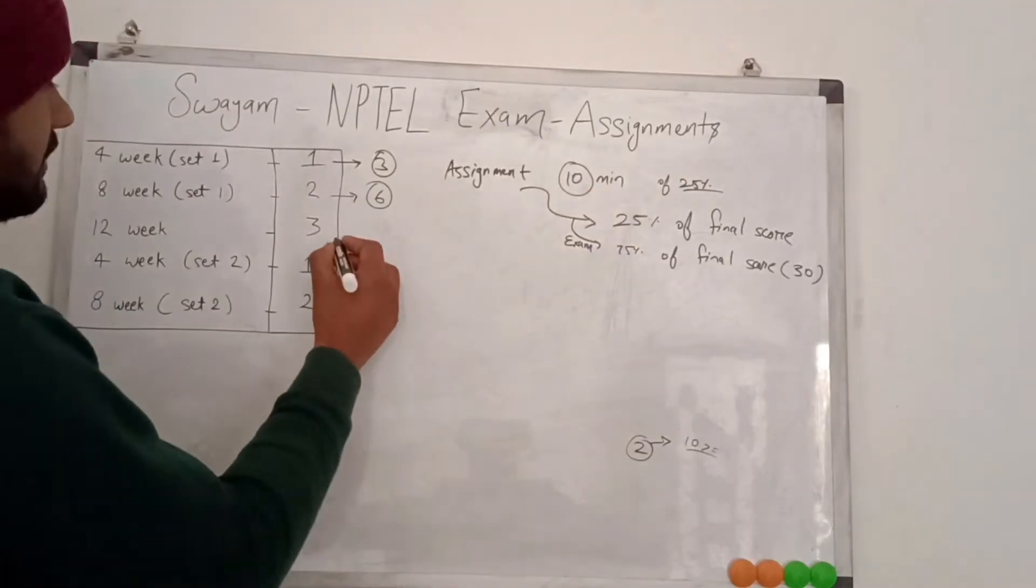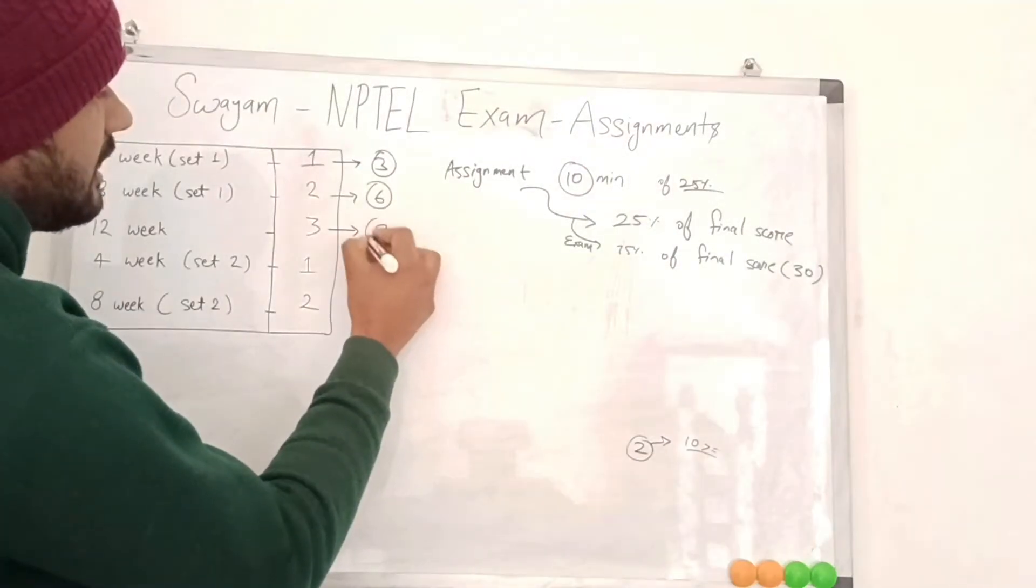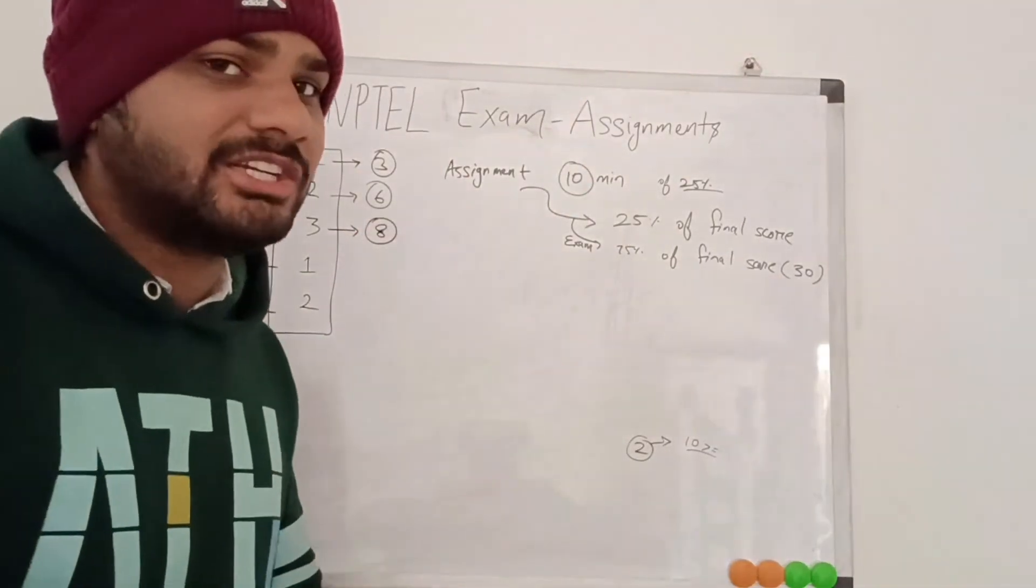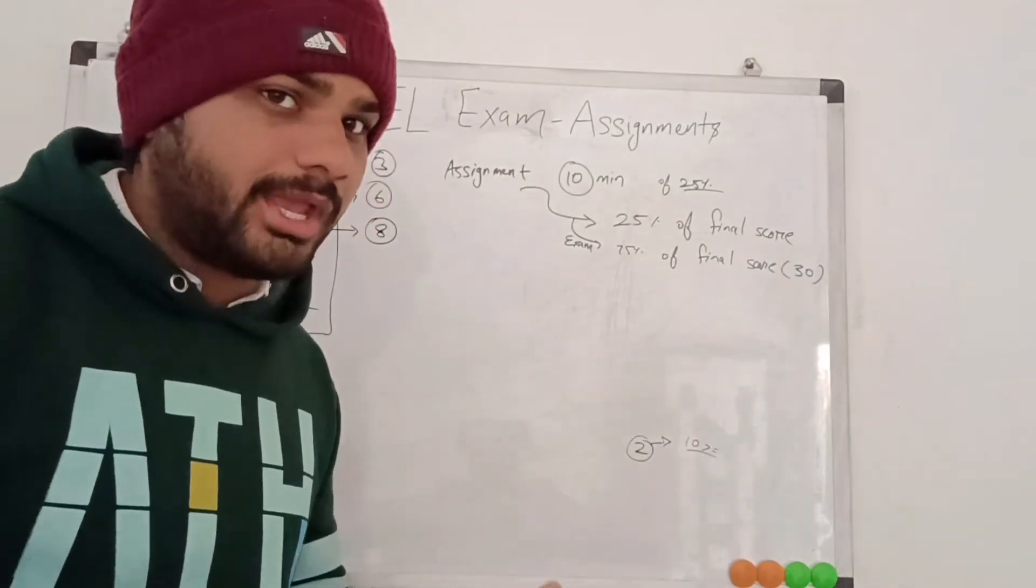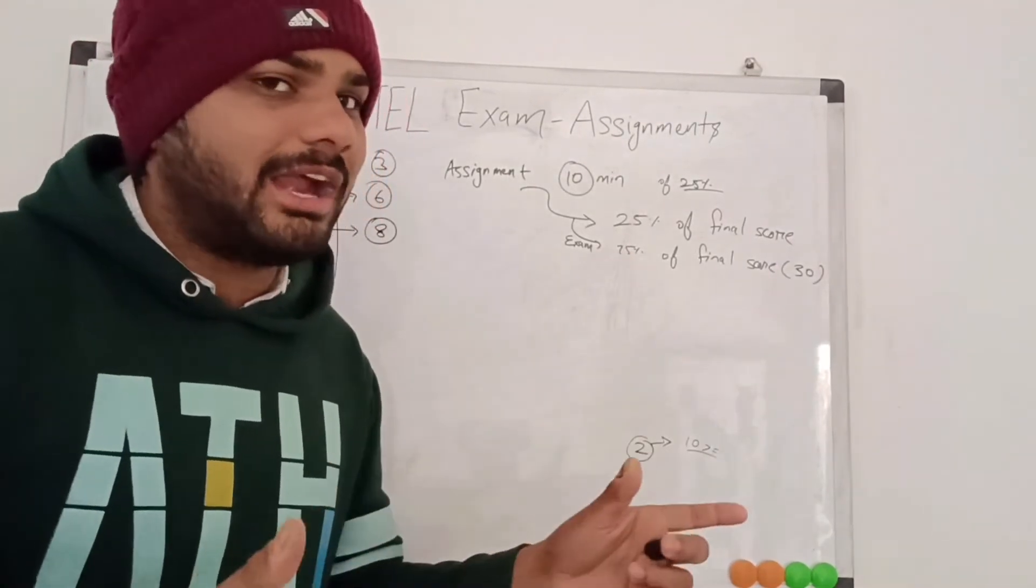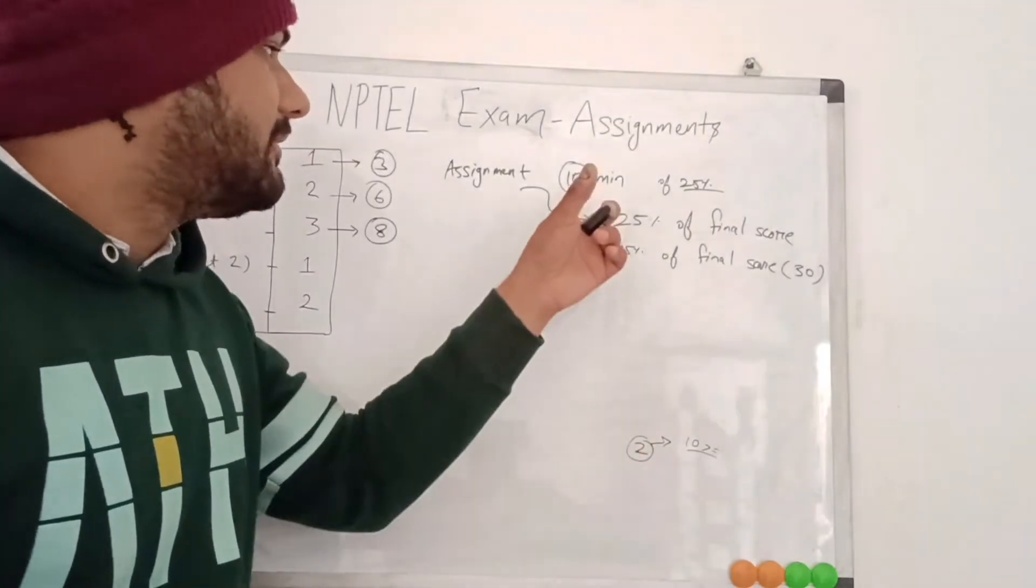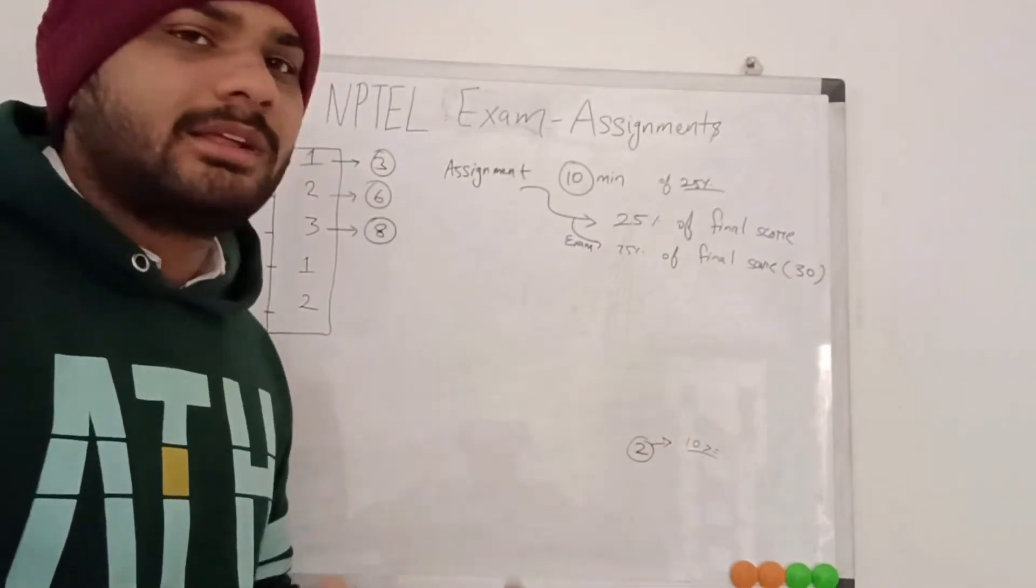For the 12 weeks they will consider 8 best assignments out of 12. They will calculate the total marks and then divide by 8, and that value will come if you pass the assignments.